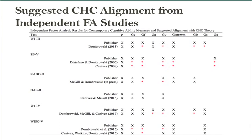Some of them are as little as we couldn't locate one or two factors. Some of them, like the WJ, are hot garbage. I'll show you the results for the WJ in a second. The red asterisks are ones that we could not locate, or were located as part of what we call a complexly determinate factor — a fusion of abilities where we're like, what is that? I don't know.